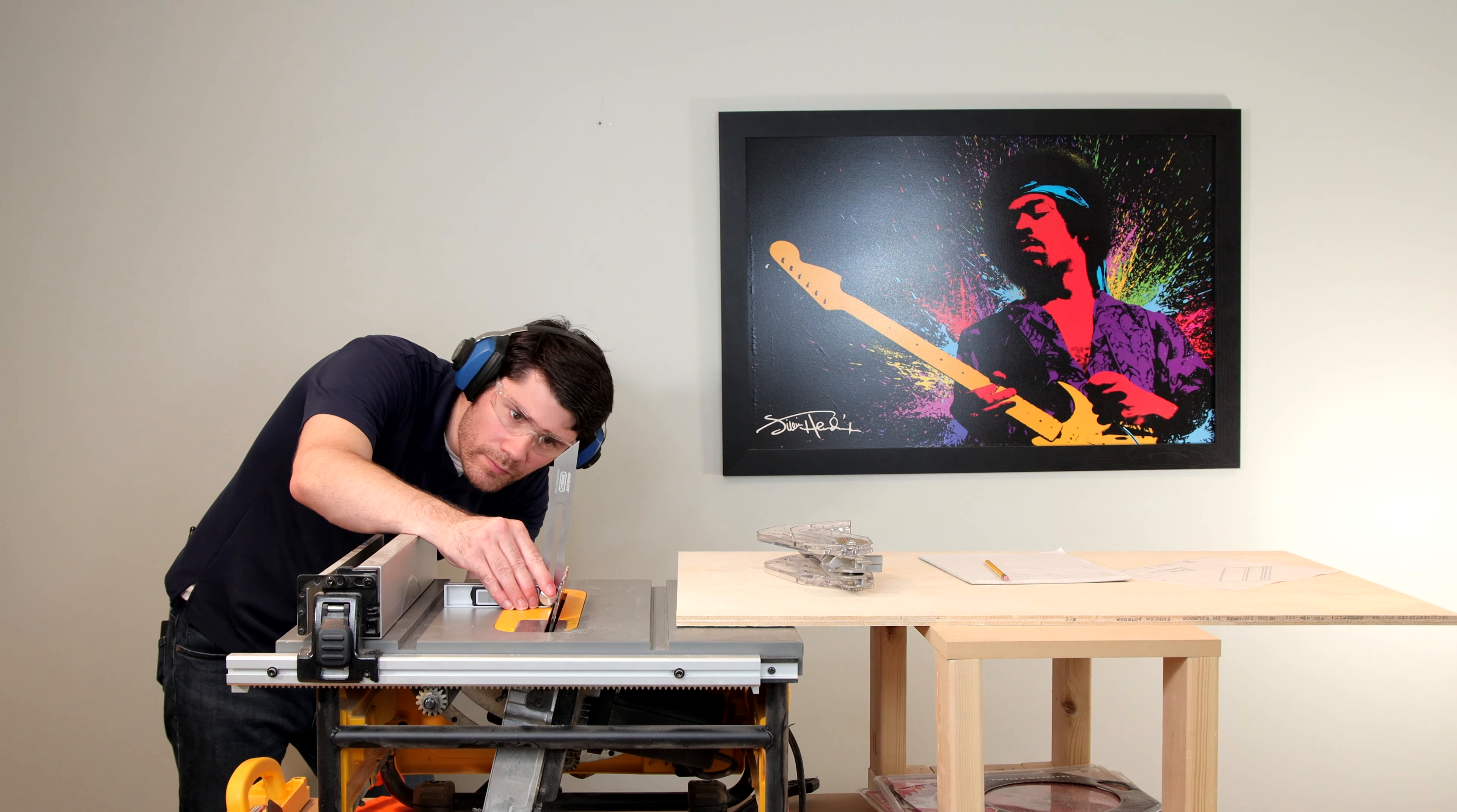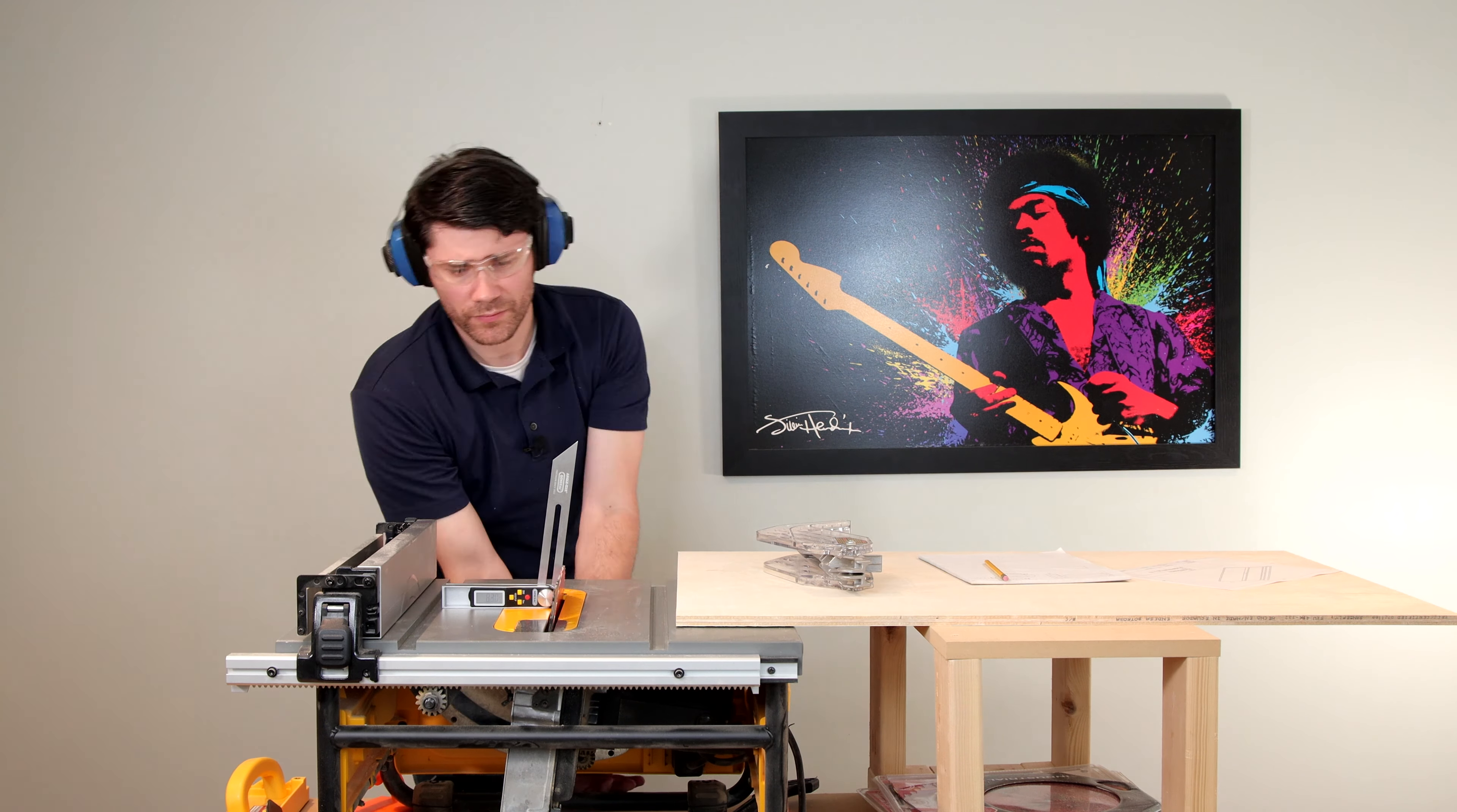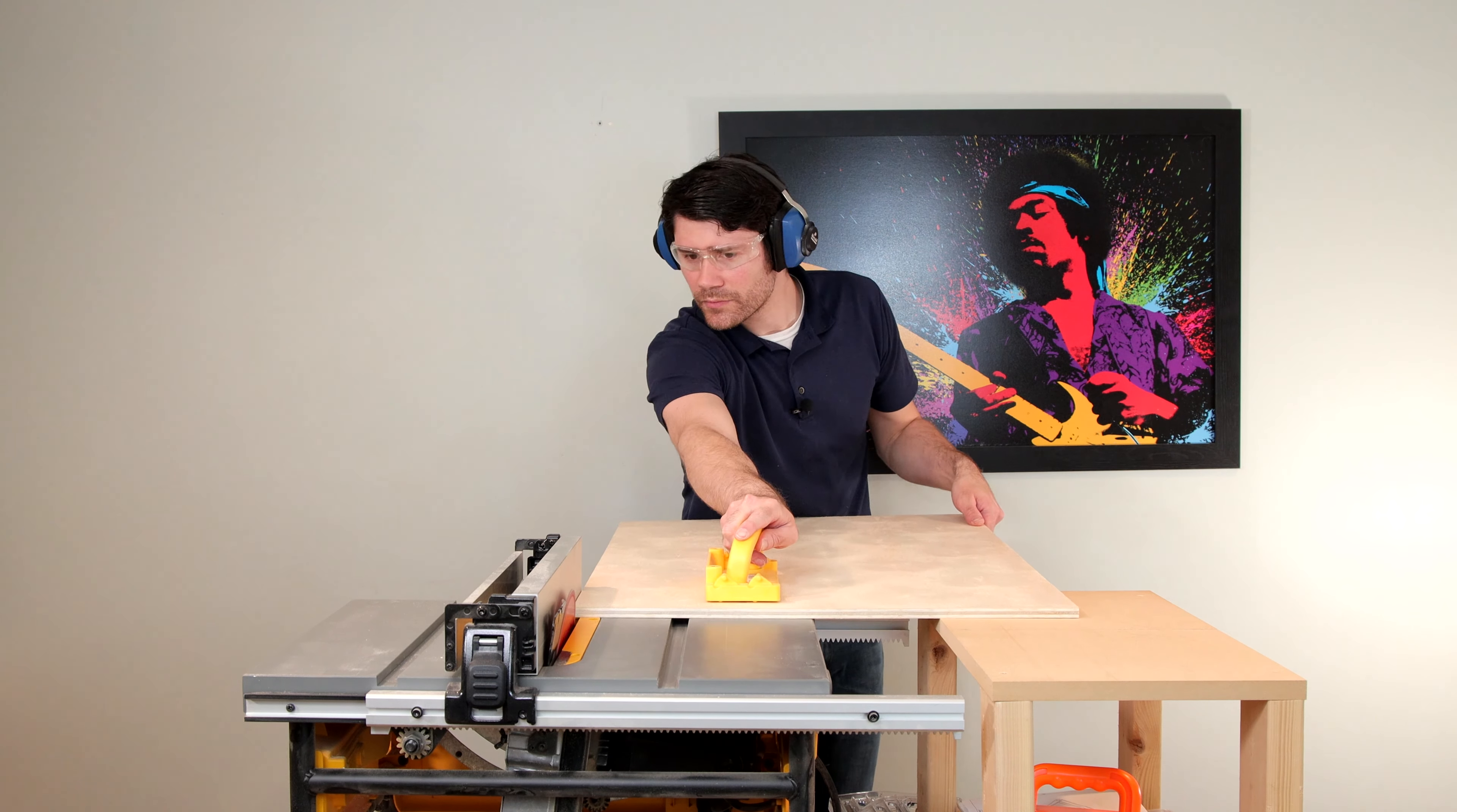Now the angle of the blade must be adjusted to seven degrees to cut the pedal rails. The reason for the seven degree angle is to make the front and back sides of the rails 90 degrees with the ground.